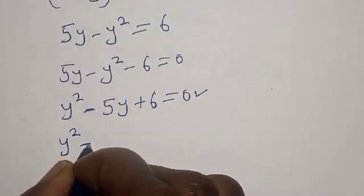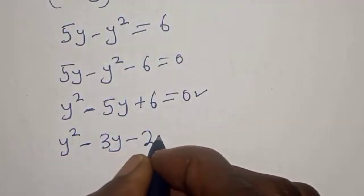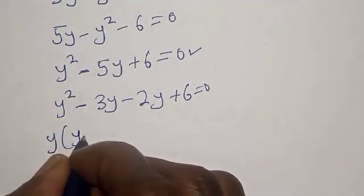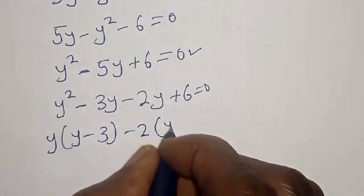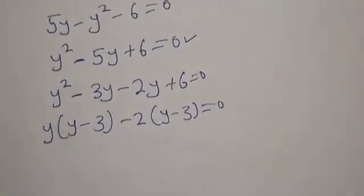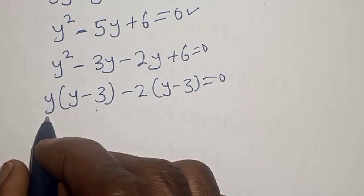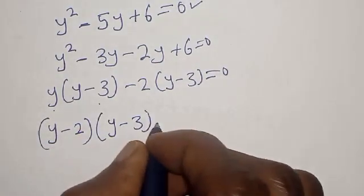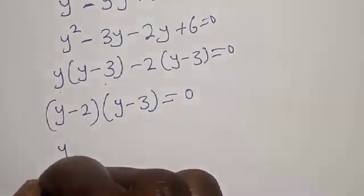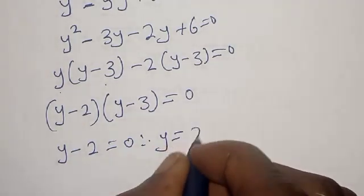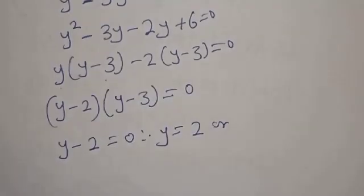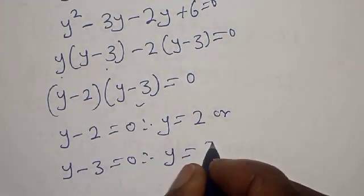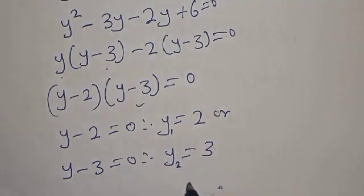In this case we are going to use the factorization method. We split the middle term: y squared minus 3y minus 2y plus 6 equals 0. Factoring out: y times (y minus 3) minus 2 times (y minus 3) equals 0. This gives us (y minus 2)(y minus 3) equals 0.